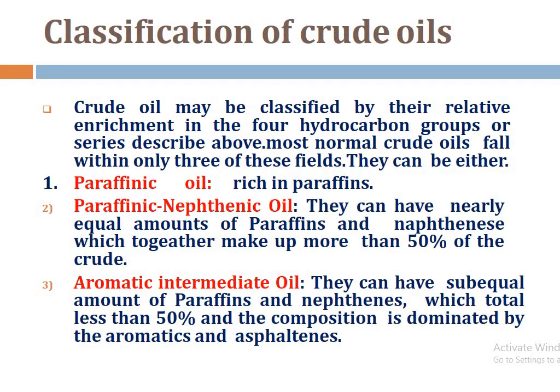Regarding the classification of crude oils: paraffinic oil is rich in paraffins. Naphthenic oil has nearly equal amounts of paraffins and naphthenes, which together make up more than 50% of the crude. The third type is aromatic-intermediate oil, which can have some paraffins and naphthenes totaling less than 50%, with composition dominated by aromatics and asphalt.